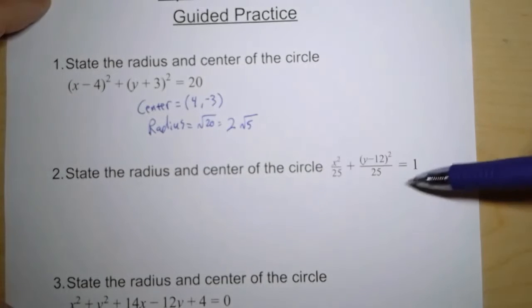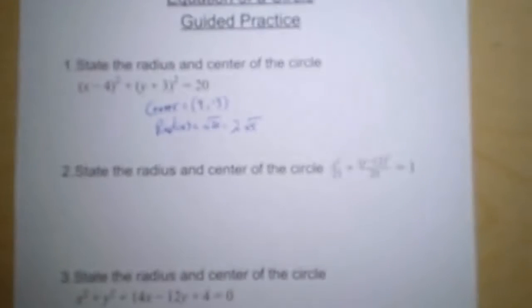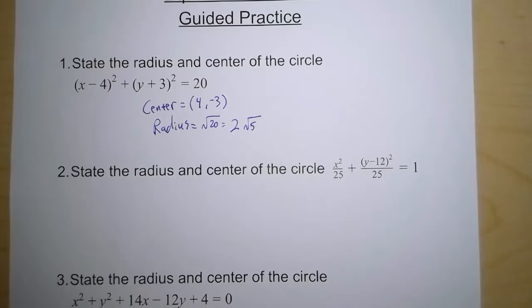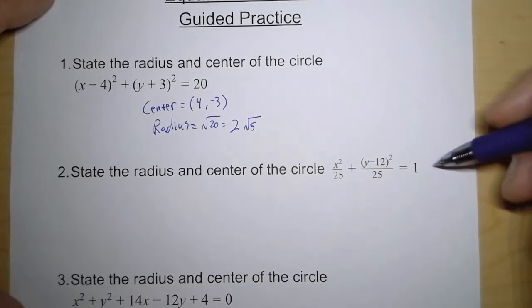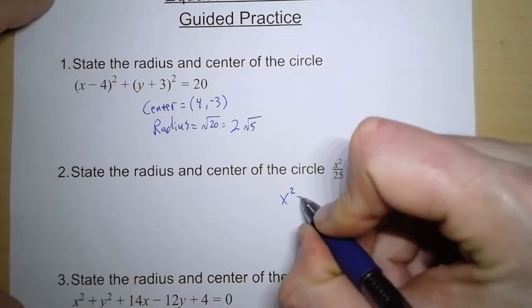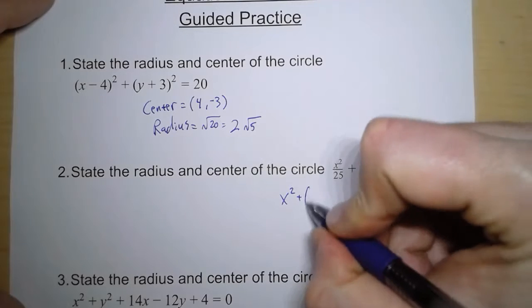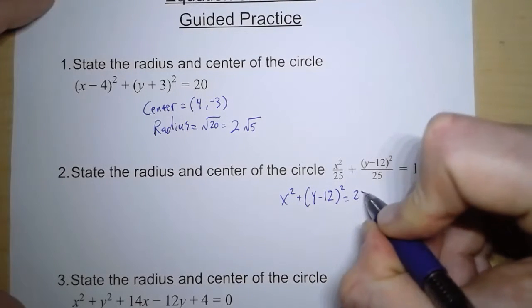Now looking at this second equation, notice that we have it equal to 1, but it's being divided by 25. And so because we're being divided by 25, the first thing we need to do is we need to get that 25 over onto the other side.